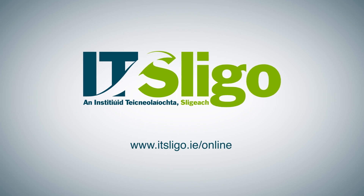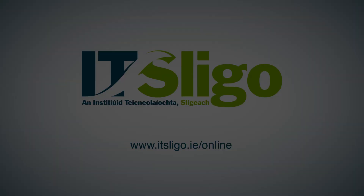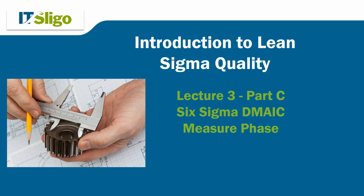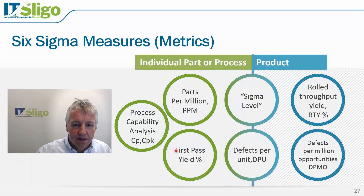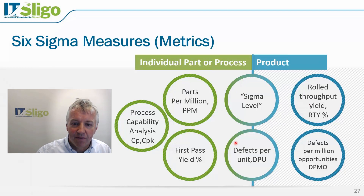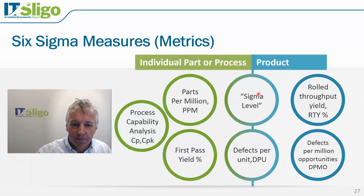Welcome to Lecture 3 Part C. We're still in the measure phase of the DMAIC, and we're talking about quality metrics. We've looked at first-pass yields, parts per million, and rolled throughput yield. DPU is the average number of defects — the total number of defects found divided by the total number of units or products built. We're now going to talk about DPMO and Sigma level.